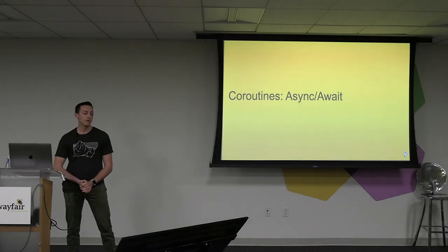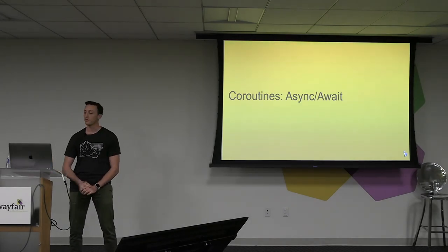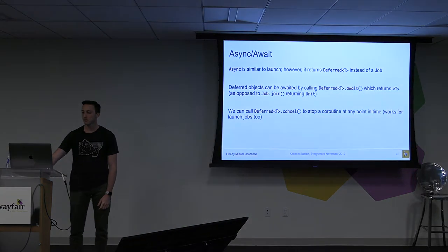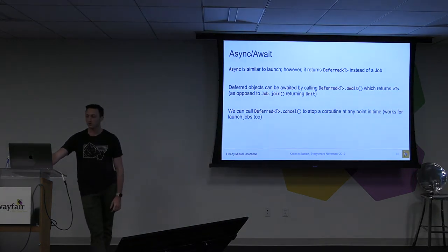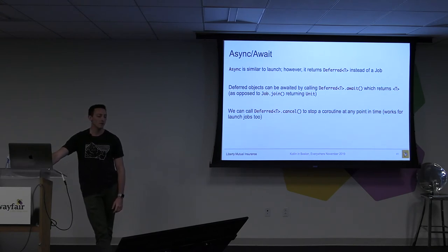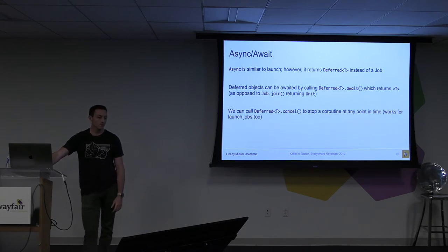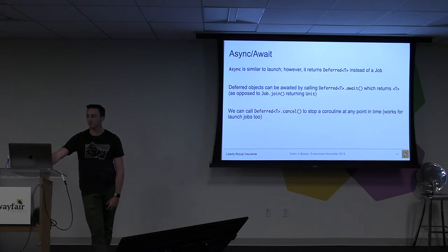In order to get the actual value out of it, we can use async and await. async is similar to launch, however it returns a Deferred object instead of a Job. The Deferred object can be awaited using deferred.await — similar to job.join — and that will actually return a value.